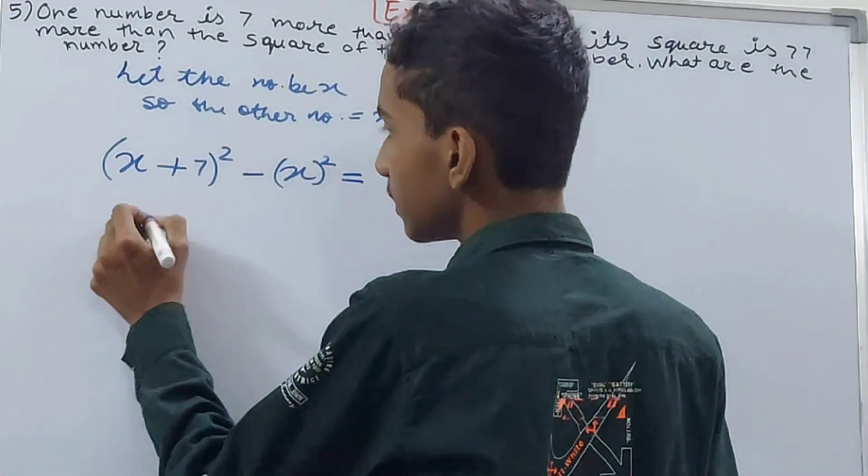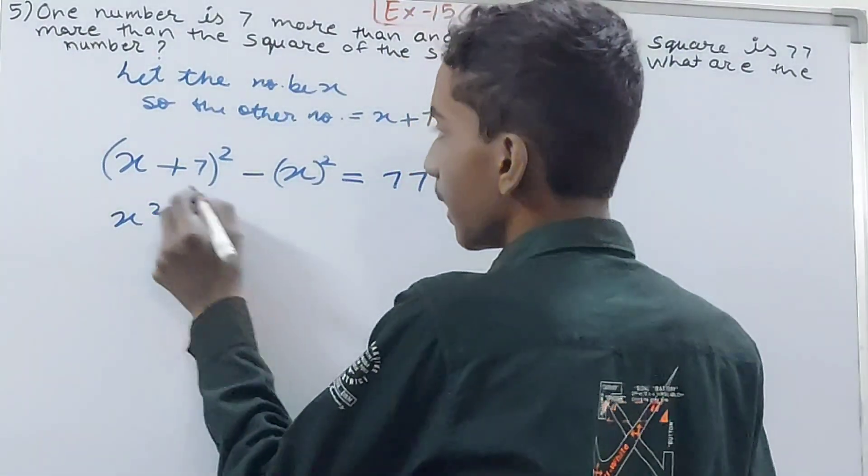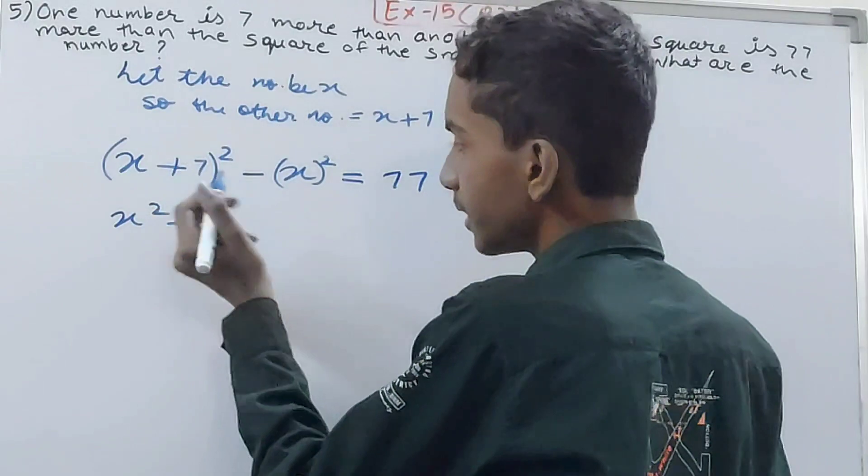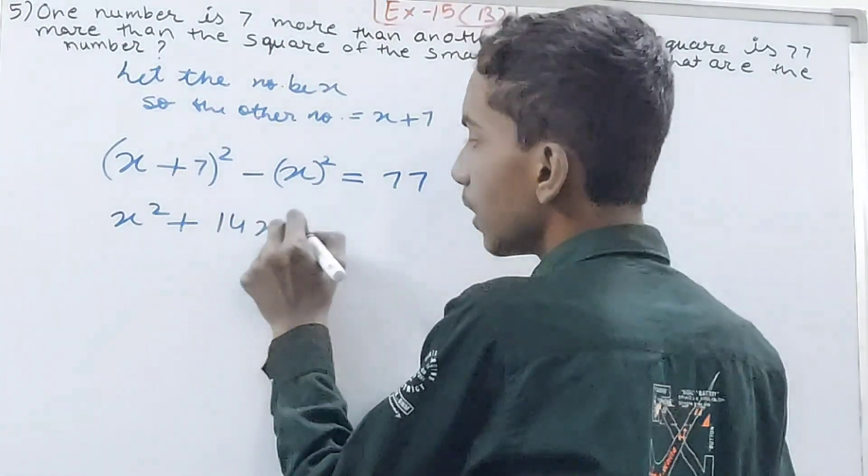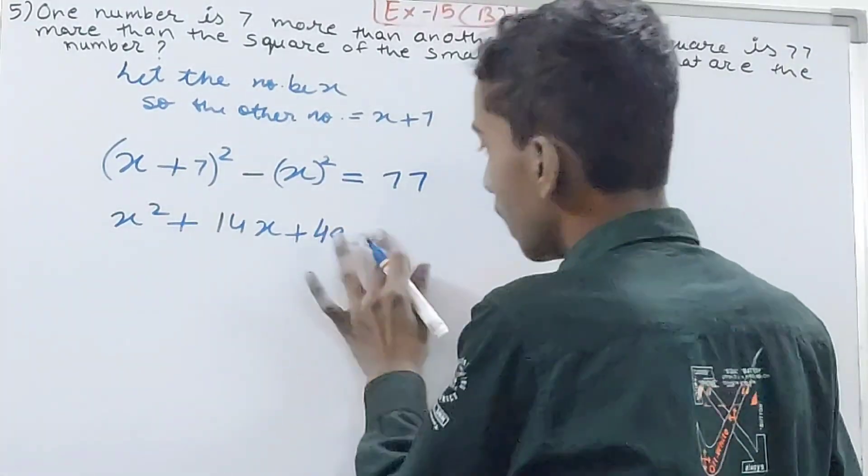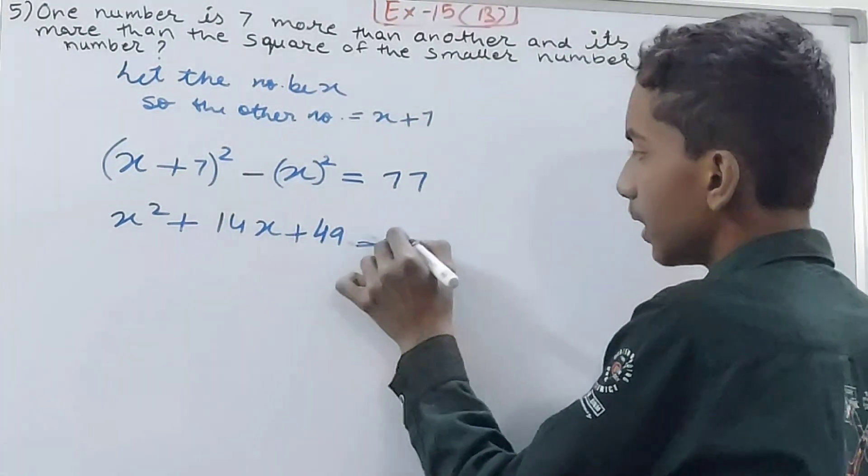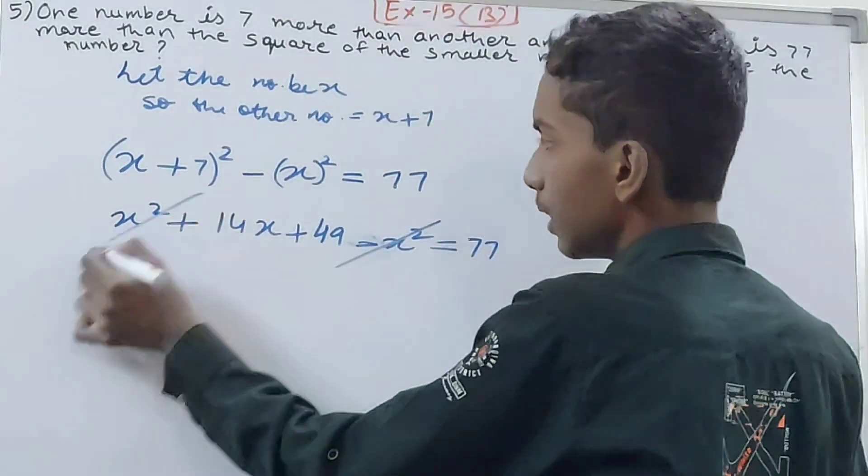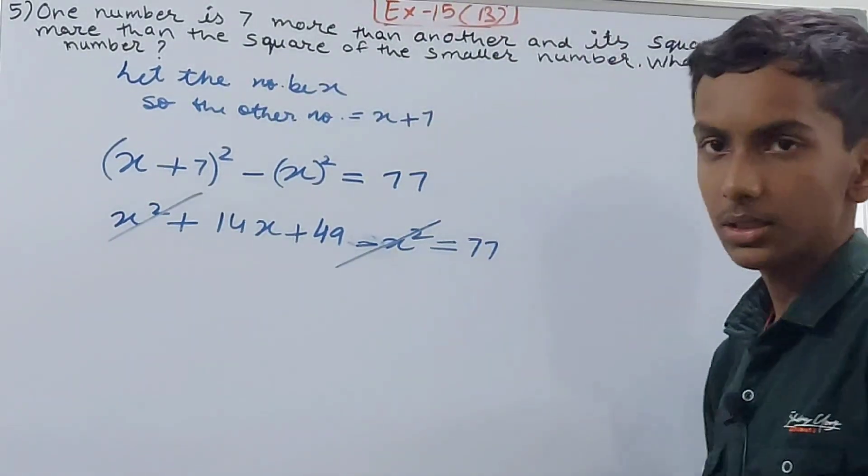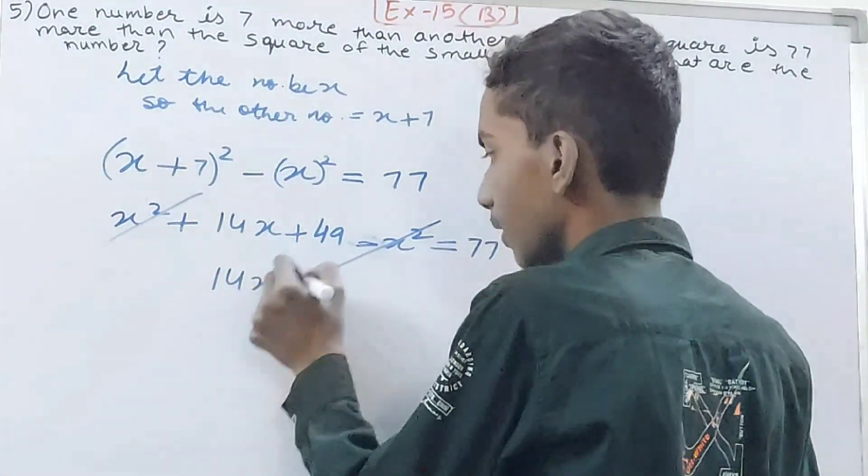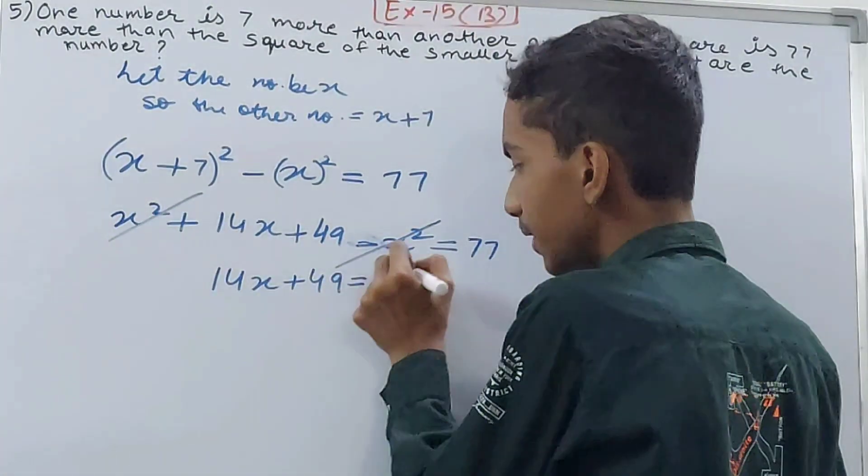Opening the brackets: x² + 14x + 49 - x² = 77. x² and -x² cancel out. Now we have 14x + 49 = 77.